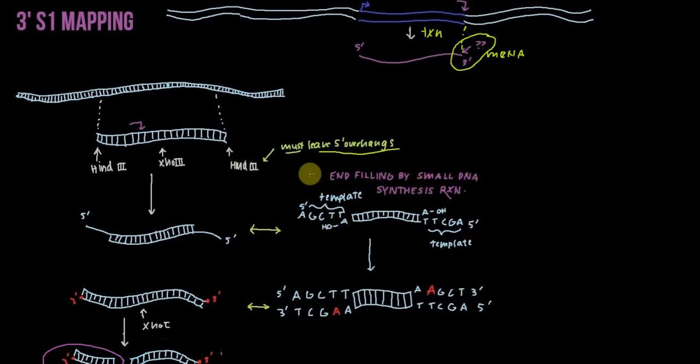And in 3' S1 mapping, when we cut our fragment, we must use a restriction enzyme that leaves 5' overhangs in order to relieve this template for end filling or a small DNA synthesis reaction, which we'll ultimately use to label our 3' ends. So this is different from 5' S1 mapping, where we can use any restriction enzyme, whether it leaves 5' overhangs, 3' overhangs, or even blunt ends in order to create this fragment.